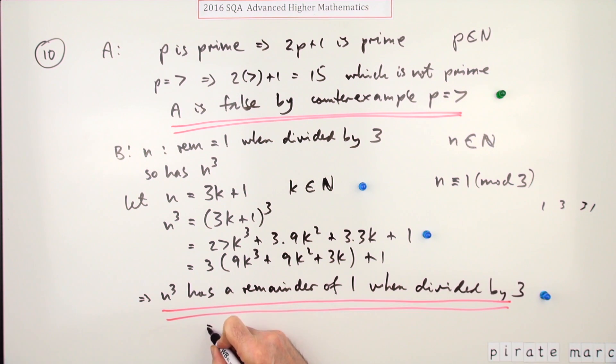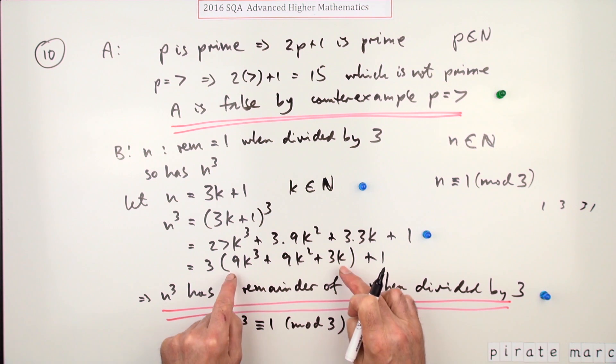But the handy thing about that notation is instead of having to write this big long sentence here, you can just say that means that n cubed is also congruent to one mod three, or modulo three. But you don't know that notation, so you've got to write it all out. Now again, the only reason this works is if this part here is a positive integer, it's a natural number.